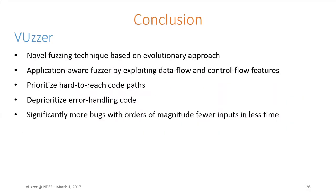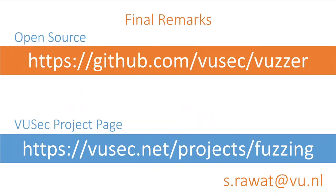In conclusion, VUzzer is a novel fuzzing technique based on an evolutionary approach. It's application-aware by exploiting data flow and control flow features. We prioritize code that's hard to reach and deprioritize code used mainly for error handling. We were able to significantly find more bugs with orders of magnitude fewer inputs in less time. VUzzer has been open-sourced — you can clone our repository on GitHub and we have a project page. I'm happy to take questions, and if you're not satisfied with the answer, you can email Sanjay, the first author of the paper, who will be able to help you more. Thank you.